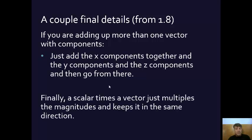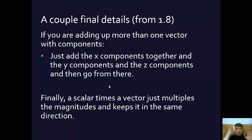Finally, a scalar times a vector is easy — it just multiplies the magnitude of the vector by the magnitude of the scalar. It's still going in the same direction; the scalar doesn't affect the direction at all. The result is still a vector, just with a different magnitude. I know this has been a little complicated, but if you listen to this a couple of times, it's not that hard. You can get this.